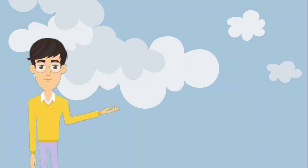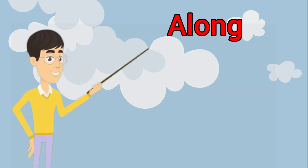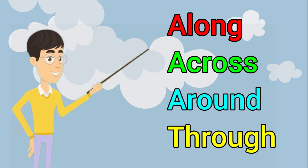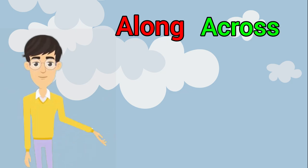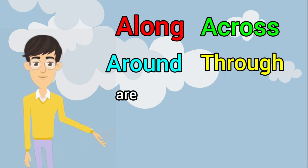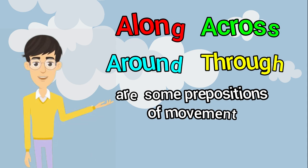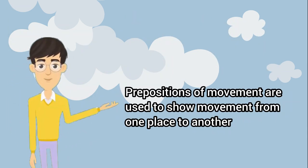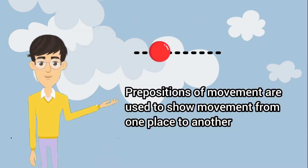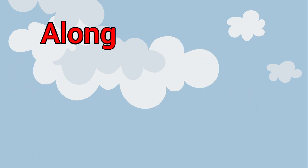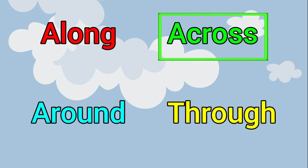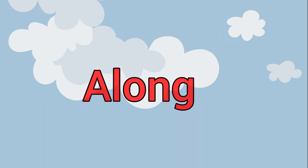Hello guys, welcome back to today's video. In this video we are going to learn four prepositions: along, across, around, and through. These are prepositions of movement, which are used to show movement from one place to another. Now let's learn these four prepositions one by one.